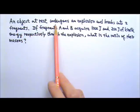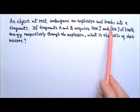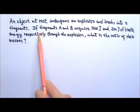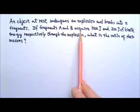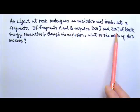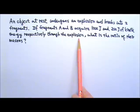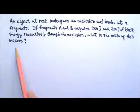An object at rest undergoes an explosion and breaks into two fragments. If fragments A and B acquire 1000 joules and 200 joules of kinetic energy respectively through the explosion, what is the ratio of their masses?